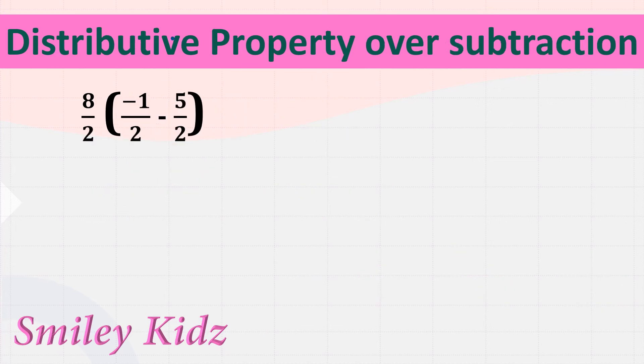Distributive property over subtraction. The property is: a multiplied by (b minus c) is equal to a·b minus a·c. So let's apply the property and solve this example.